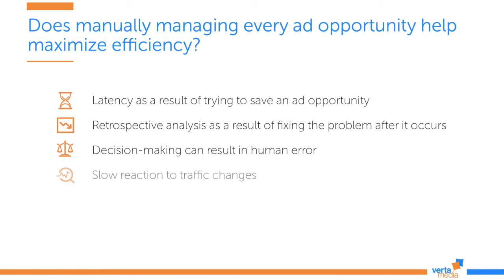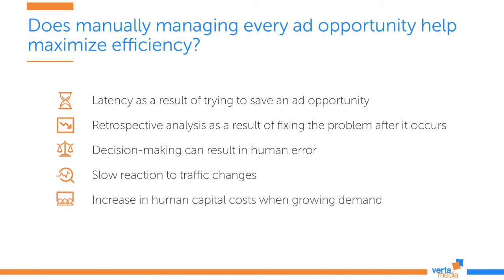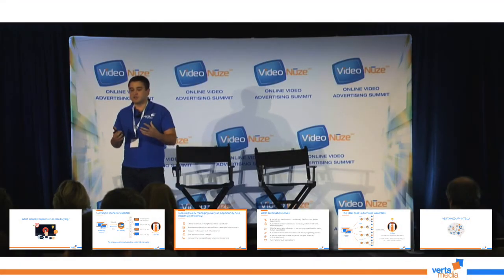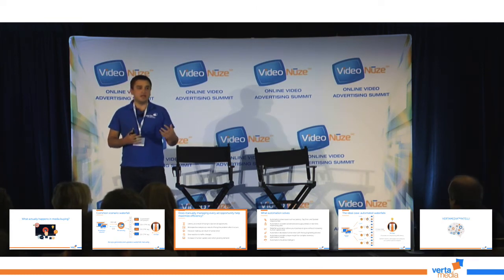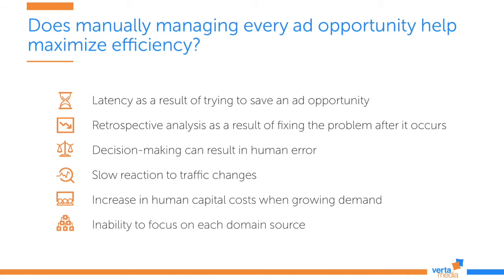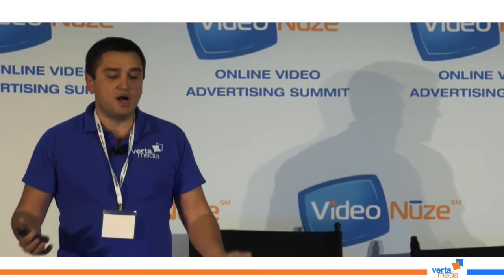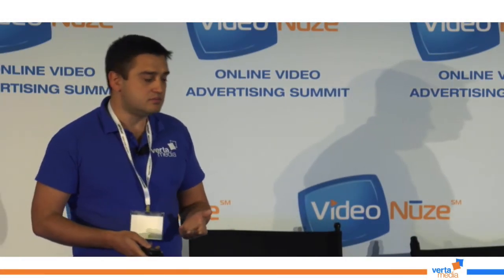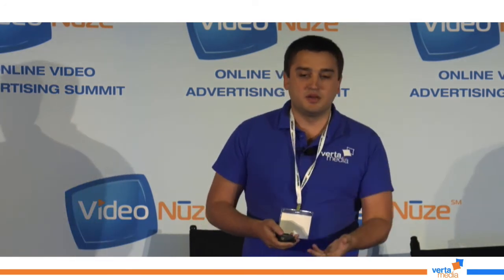He doesn't have real-time data, so he's slow to react to traffic changes. And importantly, any company in the video industry wants to grow demand and supply — so as it grows, they have to add more and more AdOps staff, which costs more and more in human capital. Also, traffic is really on the domain level, and managing waterfalls for a thousand domains manually is almost impossible. So is there a way to avoid these problems and pitfalls?